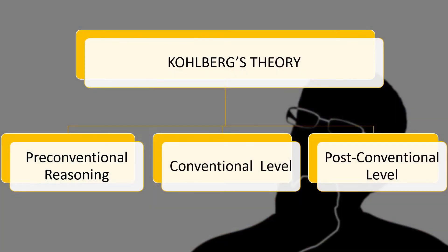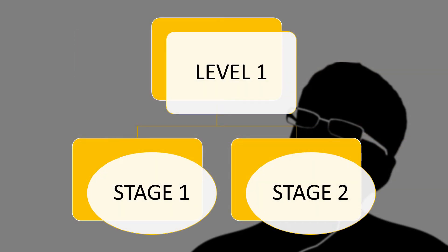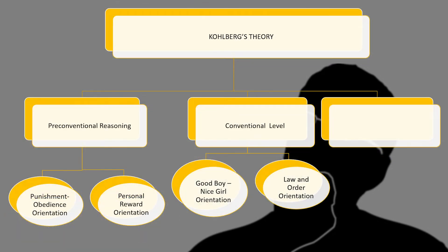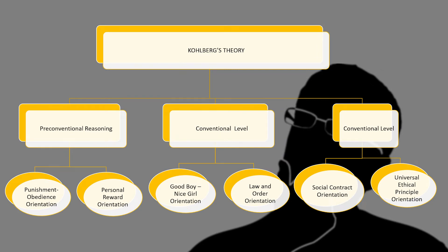The various levels of Kohlberg's theory of moral development are: the first level is pre-conventional reasoning, the second level is conventional, and the third is post-conventional. In each level, there are two stages. In the pre-conventional level, stage 1 is punishment-obedience orientation and stage 2 is personal reward orientation. In the conventional level, stage 3 is good boy/nice girl orientation and stage 4 is law and order orientation. In the post-conventional level, stage 5 is social contract orientation and stage 6 is universal ethical principle orientation.